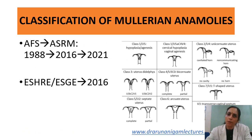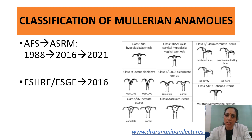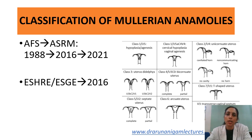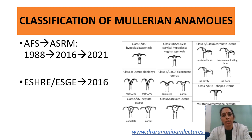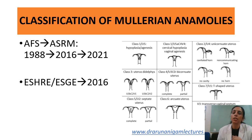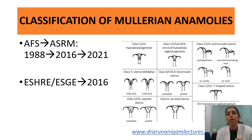What classifications do we have? We have the AFS classification and the ESHRE/ESGE classification. The AFS stands for American Fertility Society, which is now known as the American Society of Reproductive Medicine. This AFS classification was based on the classification by Buttrum and Gibbons in 1979, and the AFS classification itself was given in 1988.